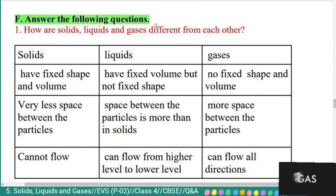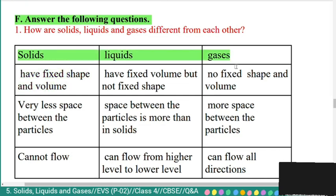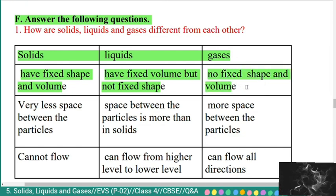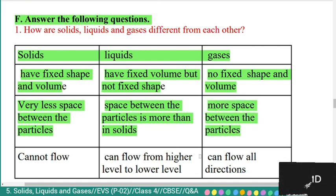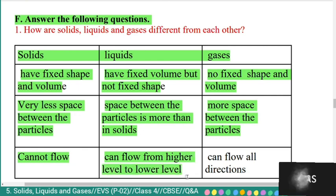Section F: answer the following questions. Question 1: how are solids, liquids, and gases different from each other? Solids have a fixed shape and volume. Liquids have a fixed volume but not a fixed shape. Gases have no fixed shape and no fixed volume. In solids, there is very less space between particles. In liquids, the space between particles is more than in solids. In gases, there is even more space. Solids cannot flow; liquids can flow from higher to lower level; gases can flow in all directions.